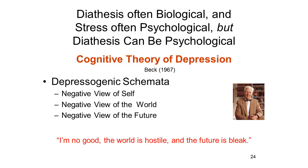Now, being depressed might cause you to have these thoughts, but that wasn't Beck's idea. He's calling them depressogenic schemata — schemata that give rise to depression. So here we have a pattern of thinking, a mode of thought characterized by these depressogenic schemata, which comprise a kind of cognitive predisposition to become depressed when something bad actually does happen to you. An environmental stressor, some negative events, interacts with a cognitive diathesis — a particular way of viewing oneself and other people and the future — to precipitate an episode of depression.